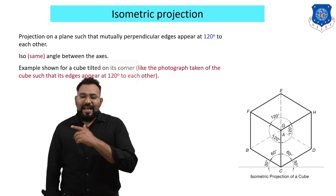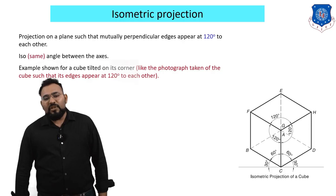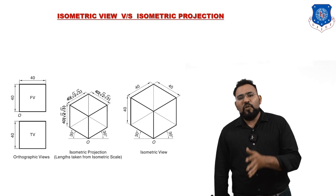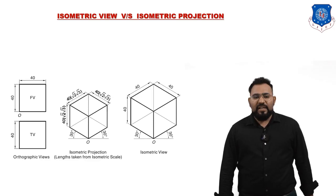For example, consider a cube tilted on its corner — as you can see on screen. Now, what is the difference between isometric view and isometric projection? You will be having a 2D drawing with front view, top view, and side view with given dimensions.